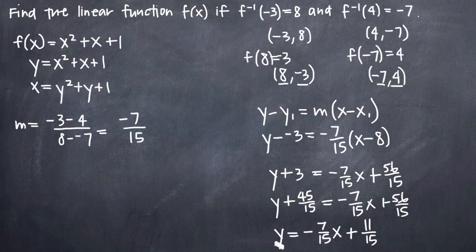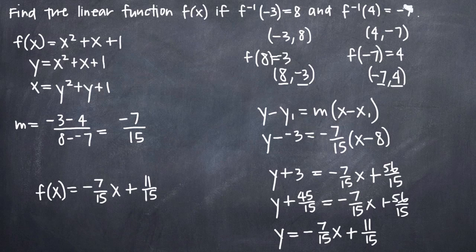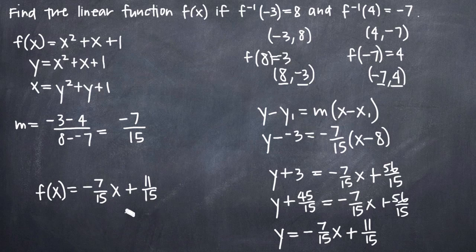When we subtract 45 from 56, we get positive 11 over 15. So this is our final answer — the linear function f of x equals negative 7 fifteenths x plus 11 over 15. If we took the inverse of this function, we would find that the points negative 3, 8 and 4, negative 7 lie on the inverse function, while 8, negative 3 and negative 7, 4 are on the original function. This is the original function f of x, found given two points on the inverse function.